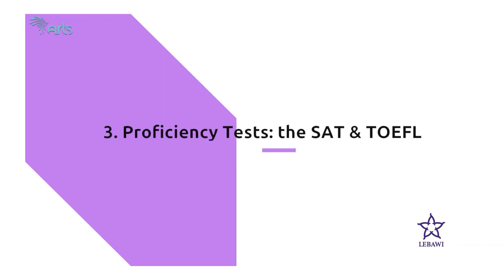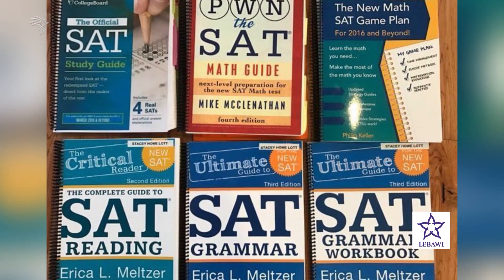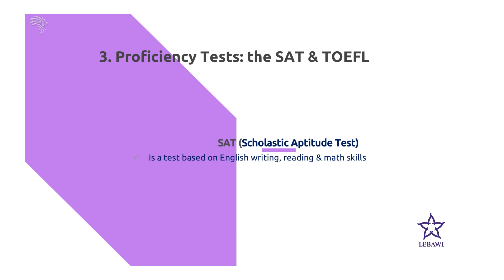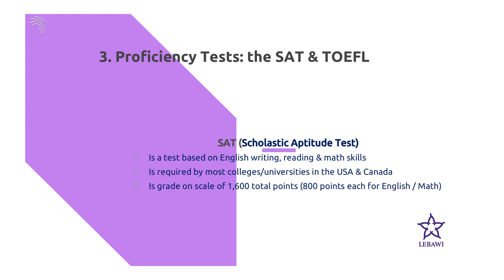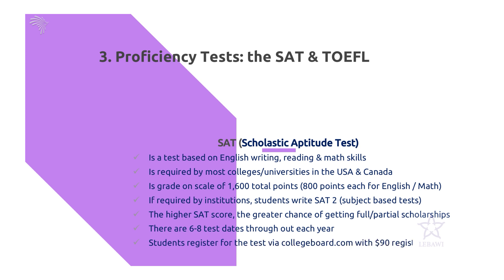Now let's look at the proficiency tests: the SAT and TOEFL. The SAT stands for Scholastic Aptitude Test, and is based on English writing, reading, and math skills. It is required by most colleges in the USA and Canada, and is graded out of a total score of 1,600 — 800 for English and 800 for math. If required by institutions, students also write the SAT Subject Test, which is subject-based. A higher SAT score means a greater chance of getting a full or partial scholarship. There are six to eight test days throughout each year, and students register via collegeboard.com with a $90 registration fee.